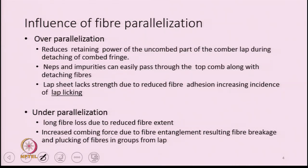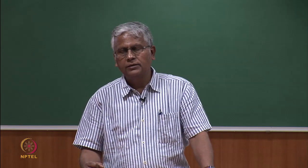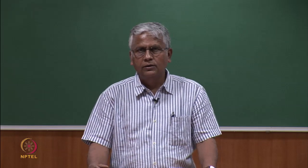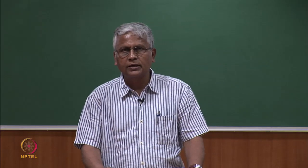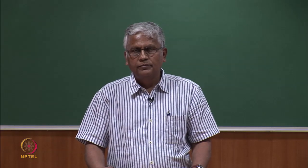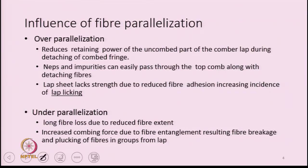Over-parallelization or under-parallelization — both are detrimental to the quality of combing. Over-parallelization will reduce the retaining power of the uncombed part of the combed lap during detaching of the combed fringe. The combed bar lap itself has some retaining power in terms of retaining the neps, short fibres, and trash particles in the lap. That retaining power gets affected by the parallelization of fibres.